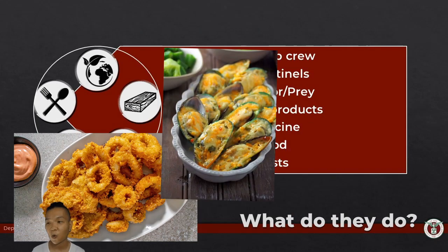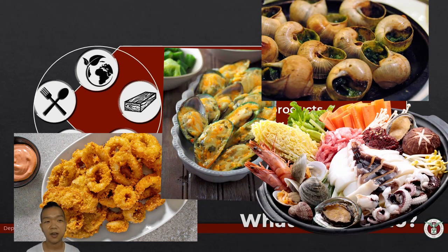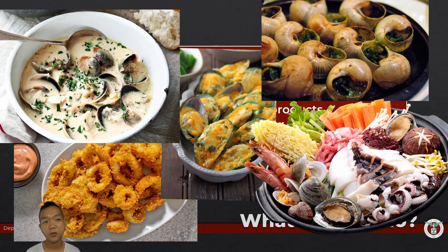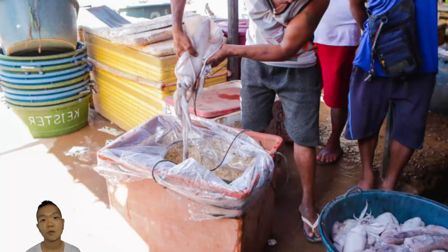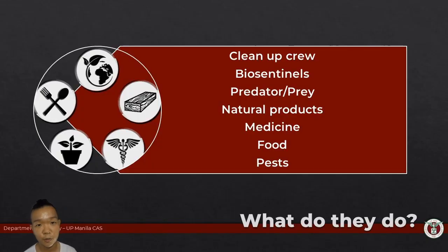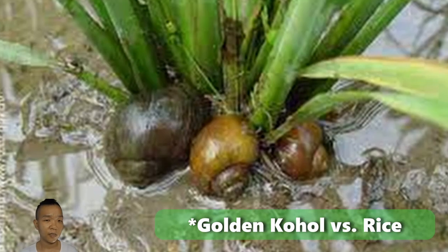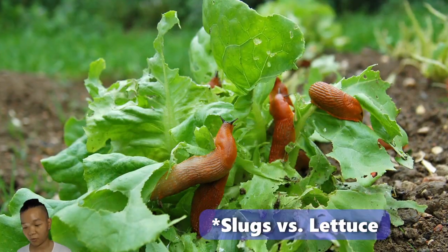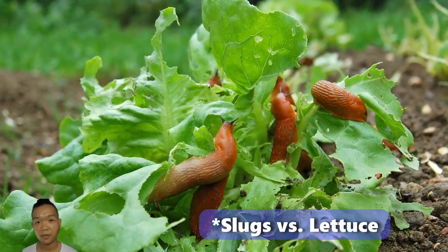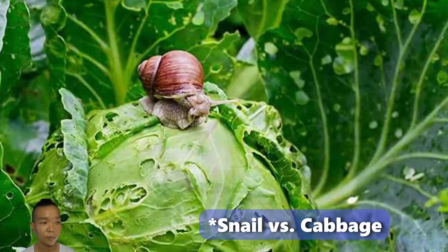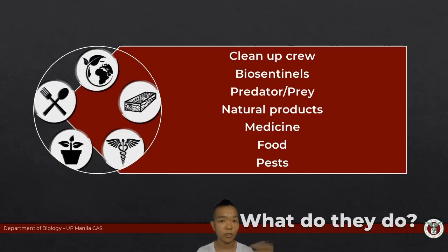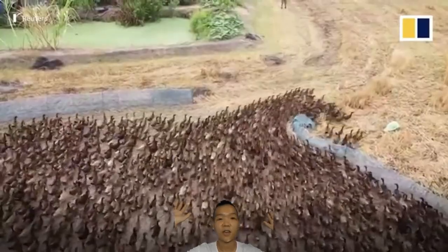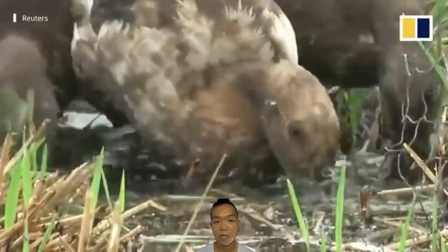Food — calamari, baked mussels, escargot, seafood hotpot, clam chowder. We actually eat a lot of mollusks — they're a very important protein source for many coastal communities. In terms of horticulture and agriculture, some of them are also considered pests — if left unmanaged, they can decimate crops. If you don't want to use molluscicides to kill the snails, you can just let loose a flock of ducks and they will eat the snails.